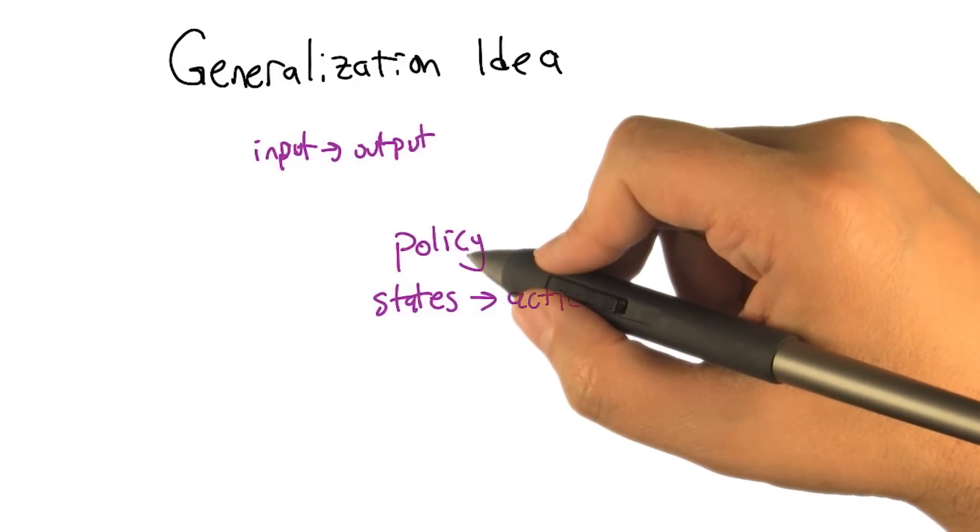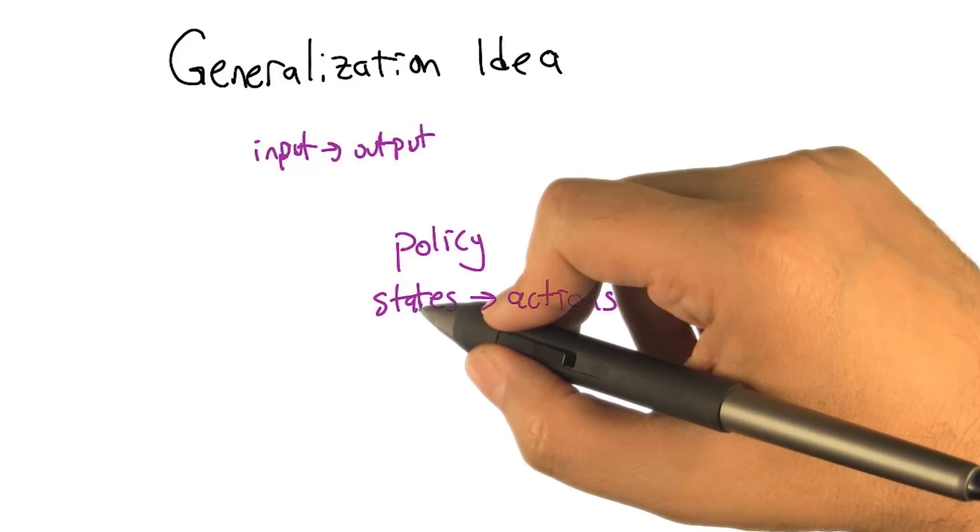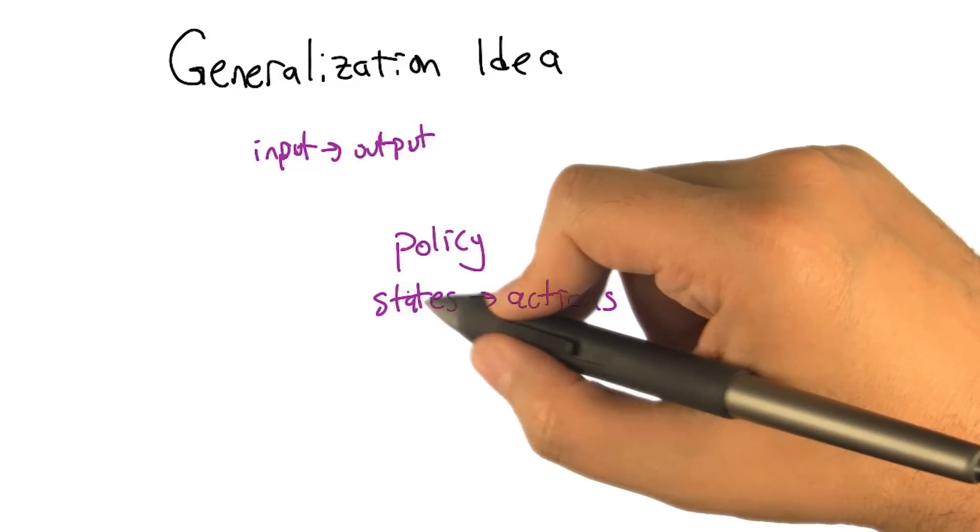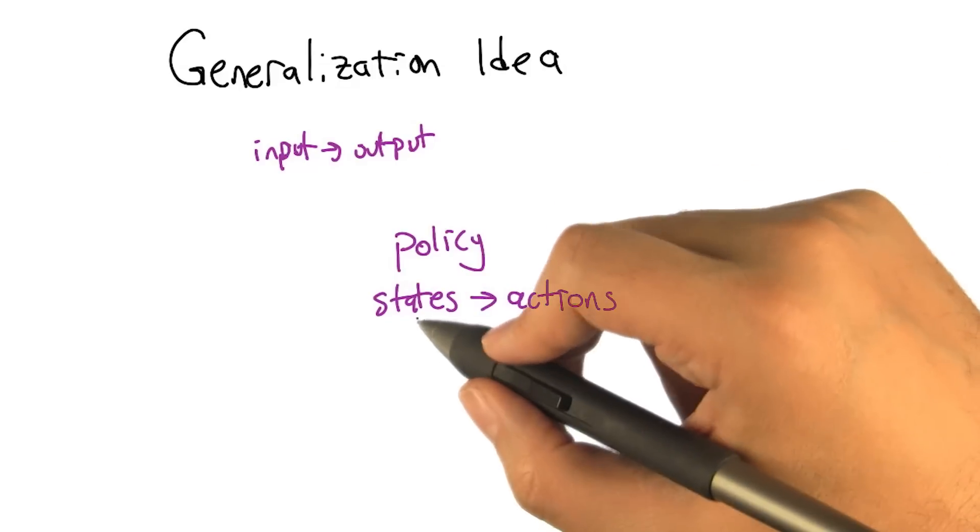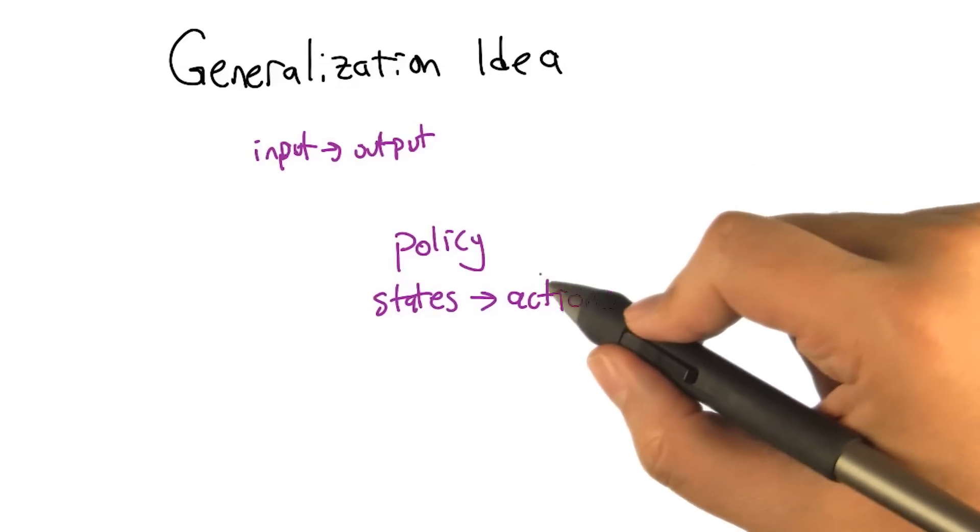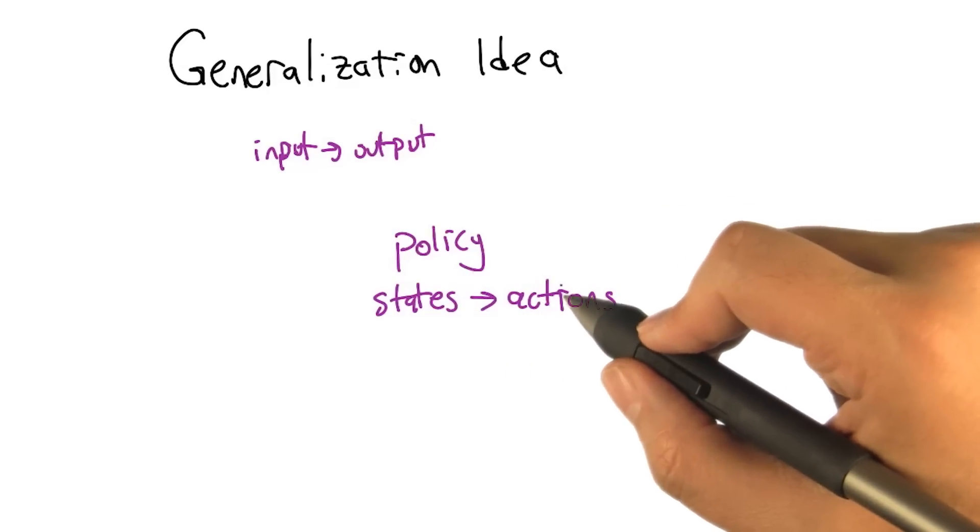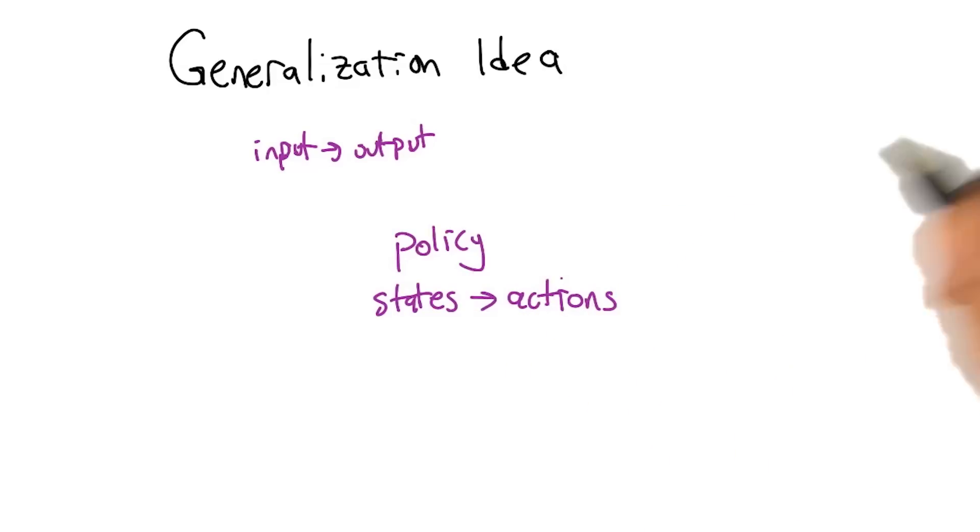Well, let's just stick with policy here for a second. So in terms of the policy, generalization would mean that to the extent that similar states have similar actions, then we could learn what the right action is for some states, and then guess what the right action is for other states using some kind of function approximation, some kind of supervised learning.